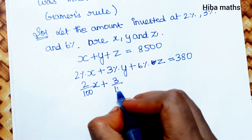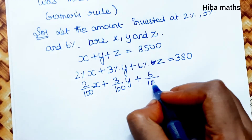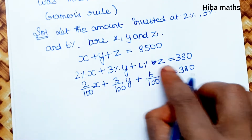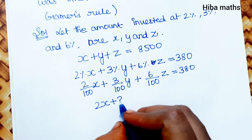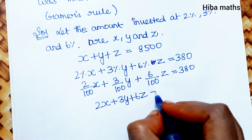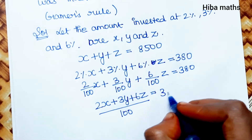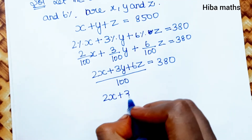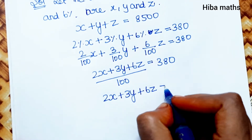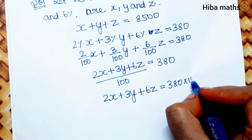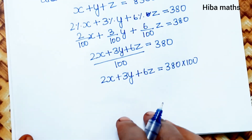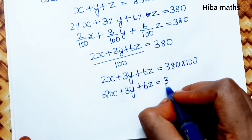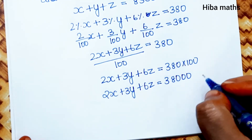The second equation: 2% of x plus 3% of y plus 6% of z equals 380. Multiplying through by 100, we get 2x plus 3y plus 6z equals 38000. That is the second equation.